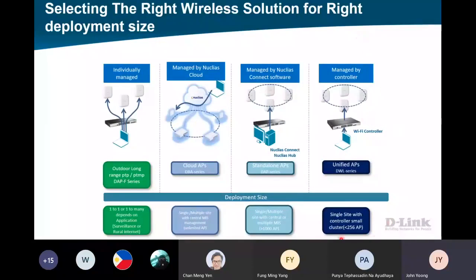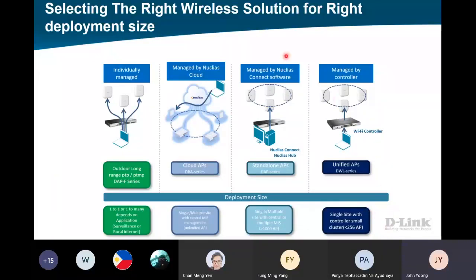The first one on the right-hand side is our hardware controller - it manages all our DWL series, maximum 256, depending on if you're going to cascade it together or not. Next, we have the Nucleus Connect. Nucleus Connect can support 1000 APs - the software you need to install yourself, it's a free software, support up to 1000 AP.